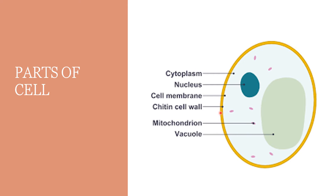Cell wall — it is the outer thick layer in the cells present in plants and fungi. It protects the cell against environmental variations.